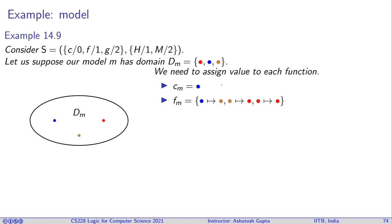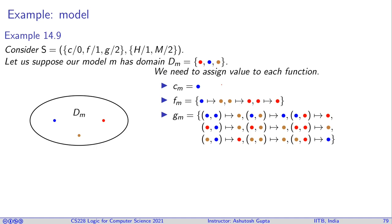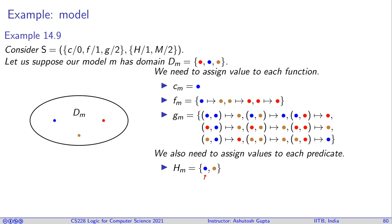For function g, which takes two inputs and produces one output, we must specify the output for every pair: for example, (blue, blue) maps to brown, (blue, brown) maps to blue, and so on for all pairs. This fully defines g_m.